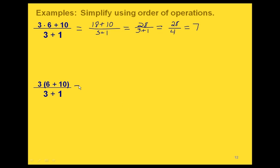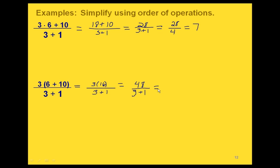The next problem has the same numbers but slightly different operations. In the numerator, there are parentheses around 6 plus 10, so we simplify inside those first: 6 plus 10 equals 16, giving us 3 times 16, which is 48. Then we simplify the denominator: 3 plus 1 equals 4. So 48 divided by 4 equals 12. Notice how adding parentheses in the second problem gave a completely different answer than the first problem where there were no parentheses.